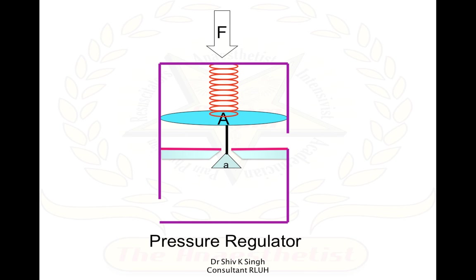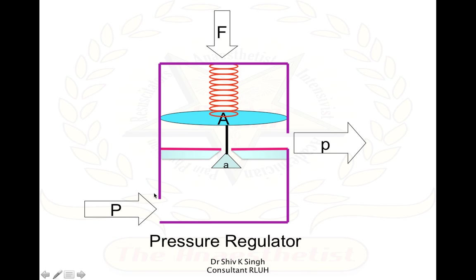The force acts on the diaphragm. When the high pressure cylinder is attached to the pressure regulator, it acts on the small area A. This is balanced by the large area diaphragm and the smaller pressure. It is basically a balance between forces. We know that pressure is nothing but force acting over unit area, so force is a product of pressure and area. This large pressure acting on a small area is balanced by the large area and smaller pressure — that is how pressure regulators work.